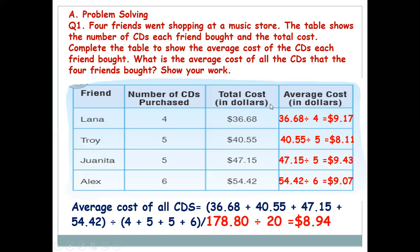Now find the average cost of all the CDs. Add total money spent by all four: 36.68 + 40.55 + 47.15 + 54.42 = $178.80. Total number of CDs purchased: 4 + 5 + 5 + 6 = 20. So 178.80 ÷ 20 = $8.94 — that is the average cost of all the CDs.